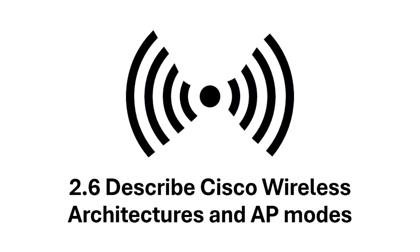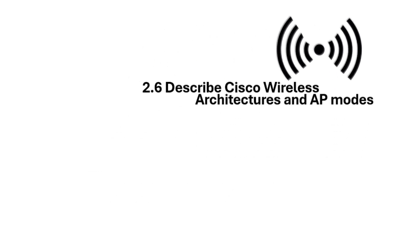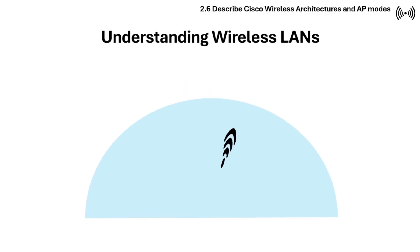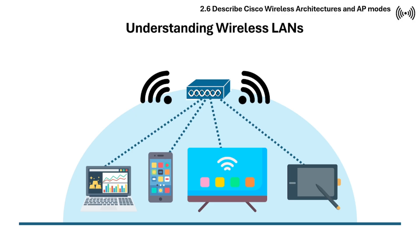Section 2.6 is about Cisco wireless architectures and AP modes. Let's start first with understanding wireless LANs. Wireless local area networks is based on the IEEE 802.11 standard and is a wireless computer network that connects devices in a limited area like a home, office, or school using radio waves instead of physical cables.